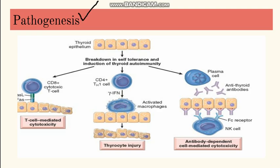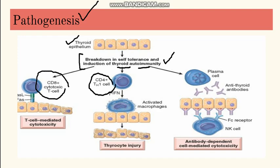This is an autoimmune disease. We can see here the thyroid epithelium, where there is induction of thyroid autoimmunity. Because of some reasons there is autoimmune reaction — a breakdown of self-tolerance. Because of this, there is activation of CD8 cells, activation of CD4 cells — this is cell-mediated immunity which is activated — and there is also activation of plasma cells.